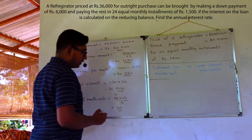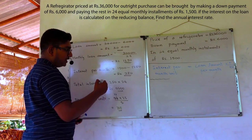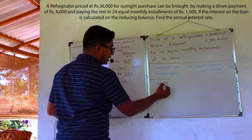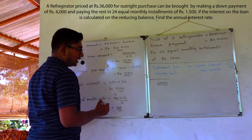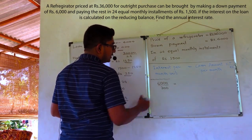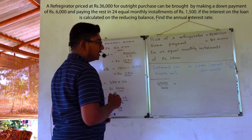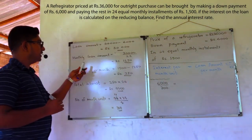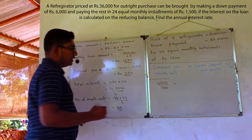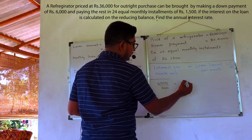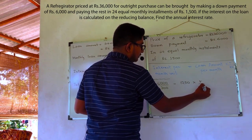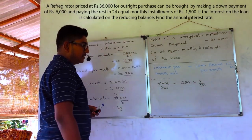Let's substitute the required values into our equation. Total interest 6000, divided by the number of month units 300, equals loan amount per month. In our second step, we calculated the monthly loan amount, which is 1250, multiplied by rate R, divided by 100.